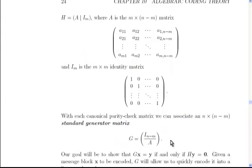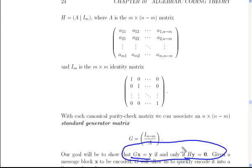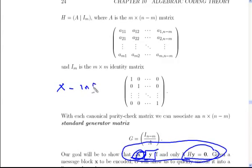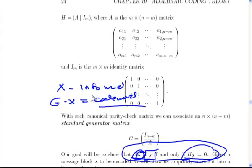Our goal is to show that GX equals Y if and only if HY equals zero. In other words, if I take any vector X and hit it with G to form a resulting vector Y, that vector will satisfy HY equals zero — meaning it is a codeword. So if I take any information word X and multiply it by G, the result is a codeword. This gives us an easy way to generate codewords from information words.